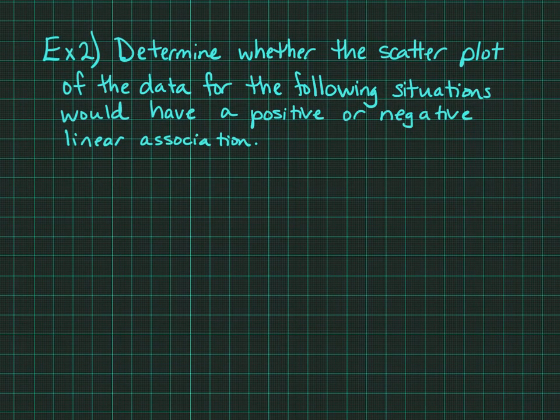Example 2, determine whether the scatter plot of the data for the following situations would have a positive or negative linear association. Part A, time working and money earned.